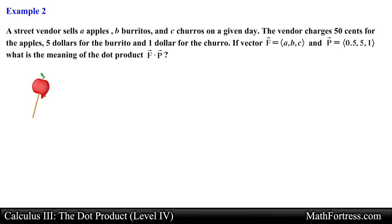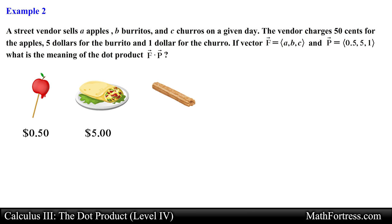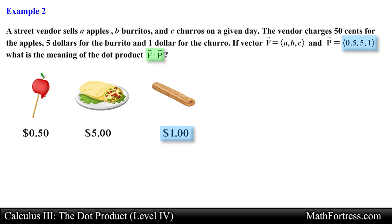A street vendor sells A apples, B burritos, and C churros on a given day. The vendor charges 50 cents for the apples, 5 dollars for the burrito, and 1 dollar for the churro. If vector f equals (a, b, c) and vector p equals (0.5, 5, 1), what is the meaning of the dot product f·p? The components of vector f represent the number of apples, burritos, and churros sold, while the components of vector p represent the price of each item respectively.